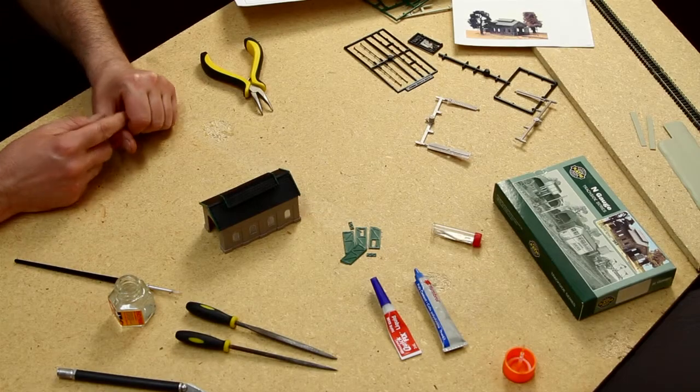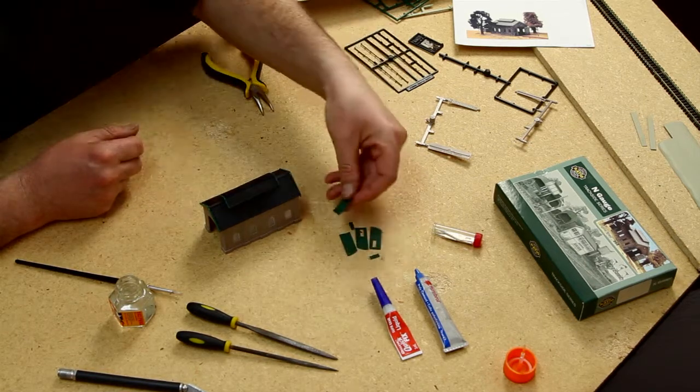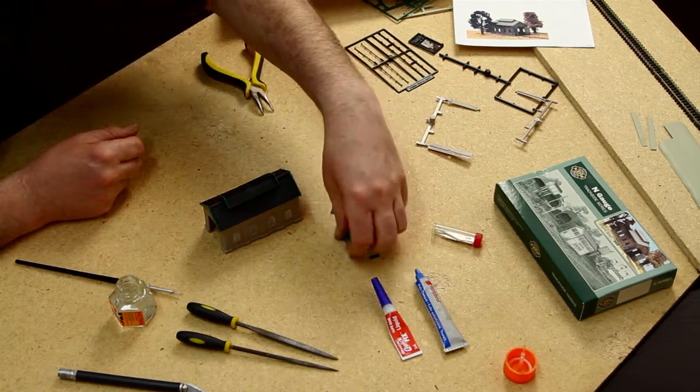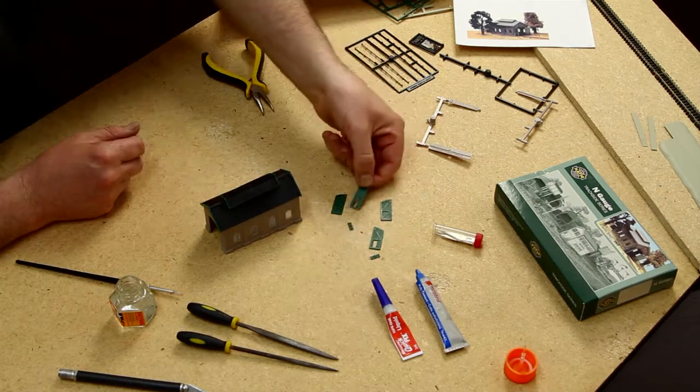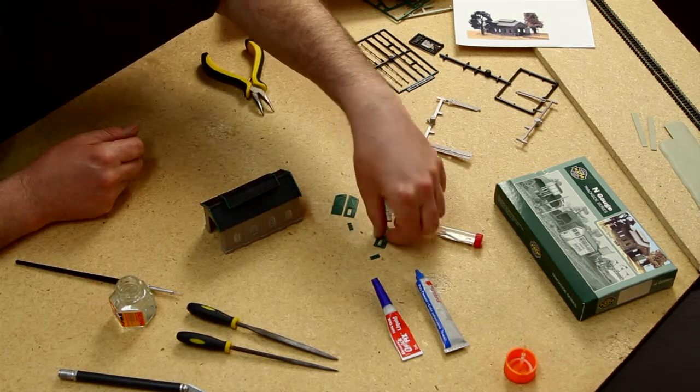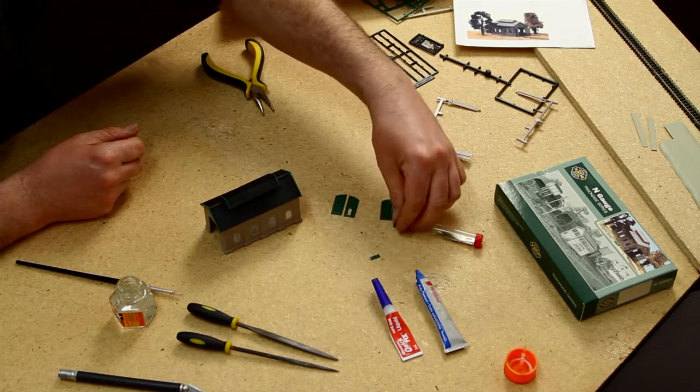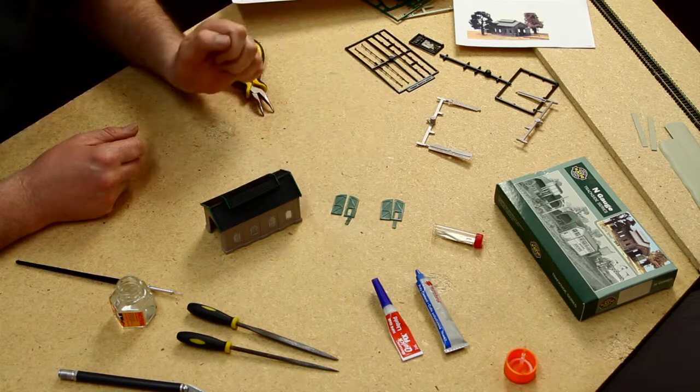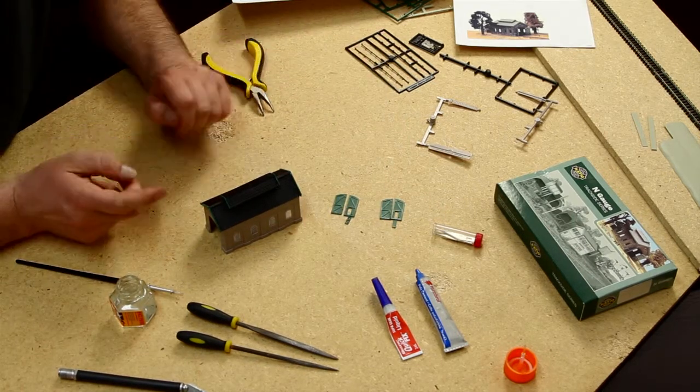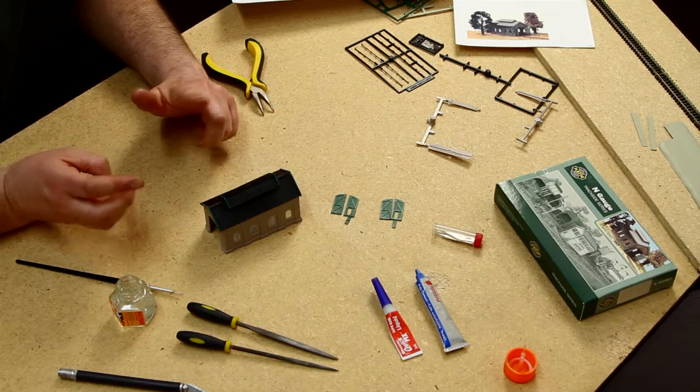Now that you have this all glued together, the next task are your doors. Now you have four doors, two at the front and two at the rear of the building. And each of them has a little wee door inside of the larger door. All you have to decide is whether you want them open or closed before you glue them on.